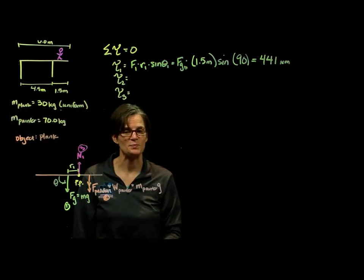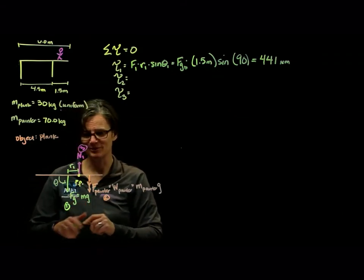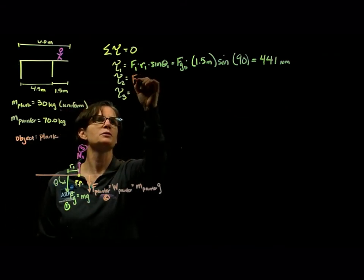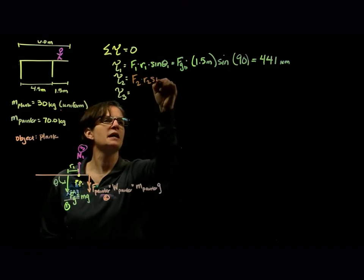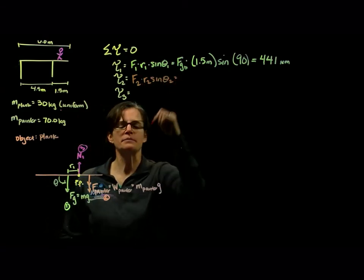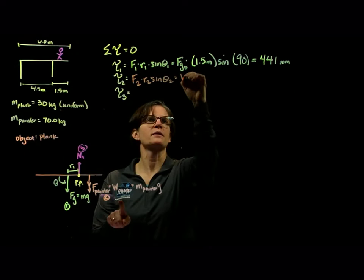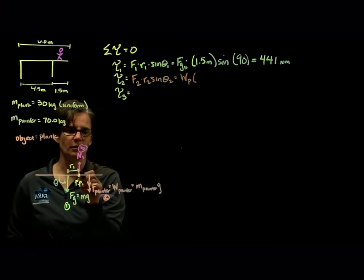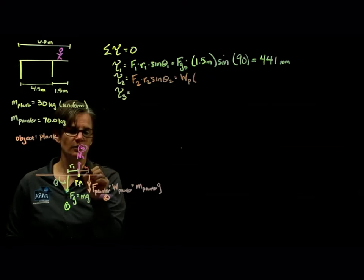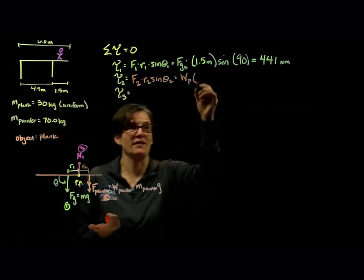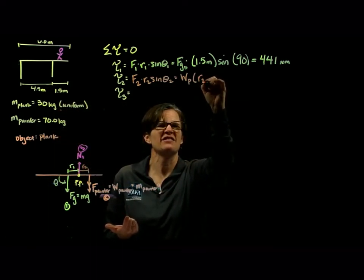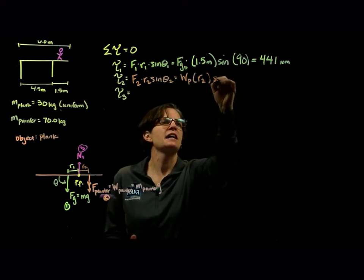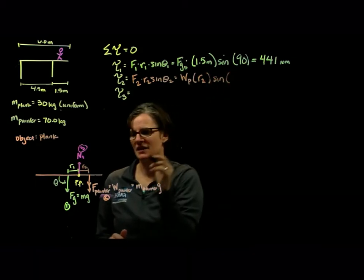Force number 2. Force number 2 is our painter. So that's the force 2 times the radius 2 times the sine of the angle 2. The force of 2 is the weight of the painter times its radius. Well, that's from the pivot point to the painter. We have no idea what that is. In fact, that's what we're interested in.